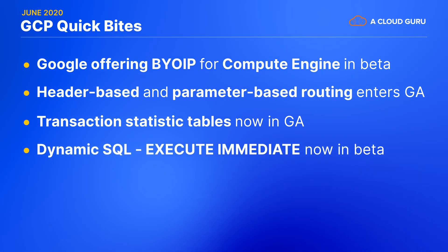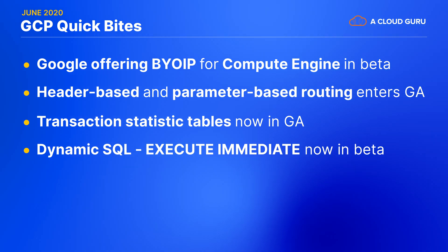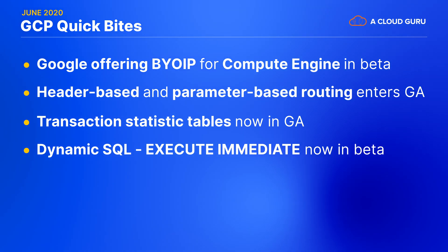The new Dynamic SQL feature for BigQuery is now in Beta. Using Execute Immediate, it will allow you to execute dynamically generated SQL strings from within BigQuery. For those who are unaware of what Dynamic SQL can do, it allows for client applications to act interactively, passing different information at different times from the user. This will mean more custom and dynamic experiences for the user and less guesswork for software designers.